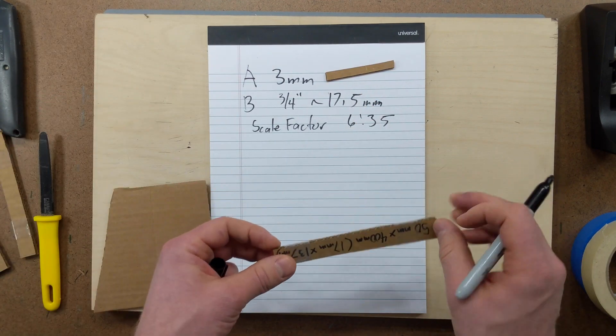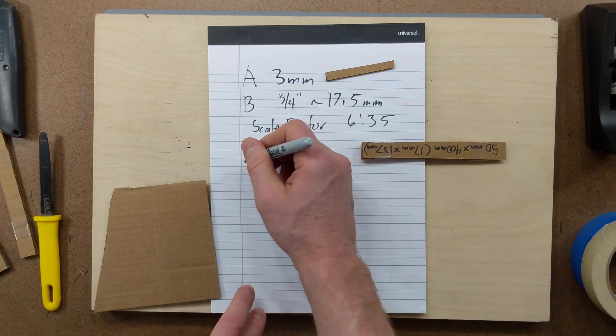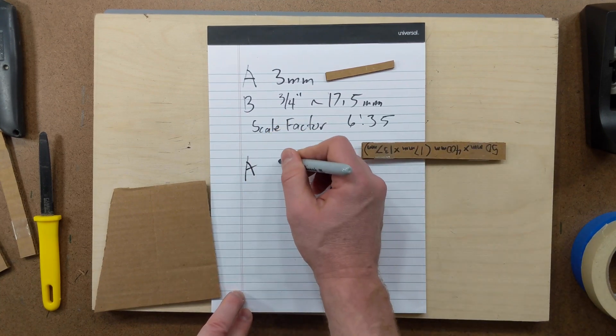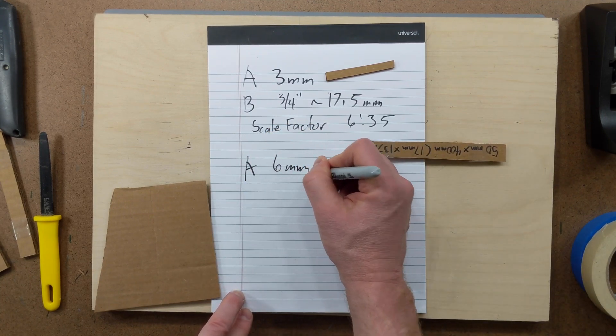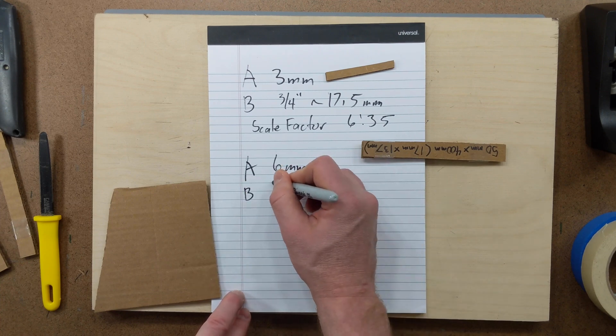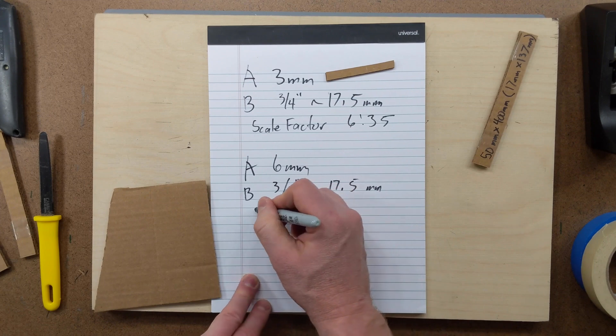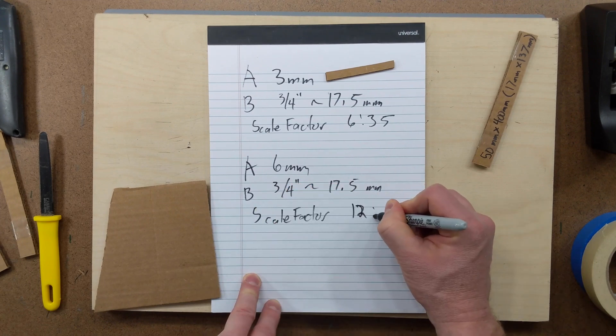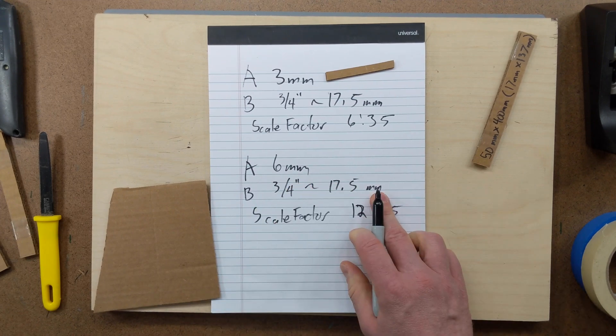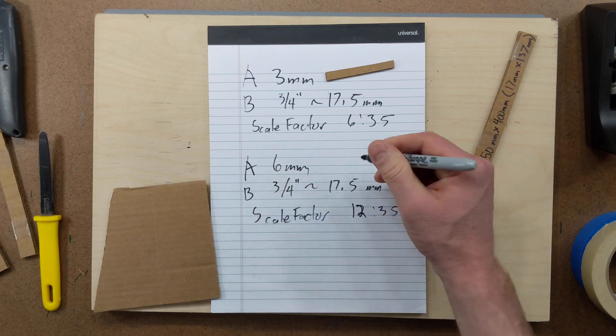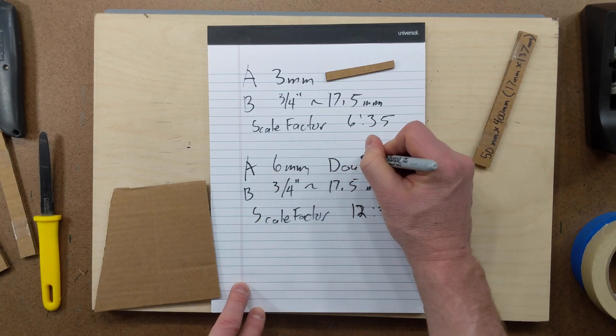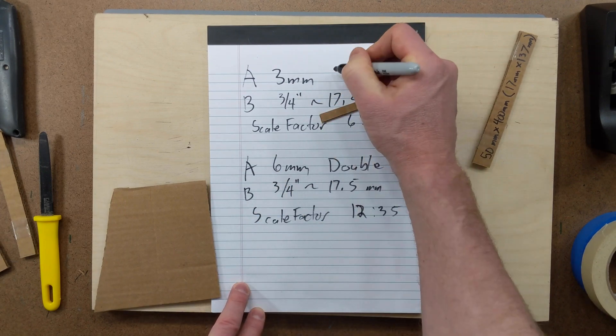But I want to use a double sheet of cardboard. Well, that's easy. Here I have my length A is 6 millimeters. My length B stays the same, so that means I get a new scale factor of 12 to 35. So this is my new scale factor for double. This is double, and then we have single.